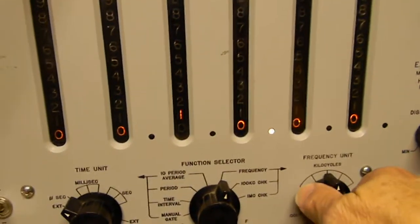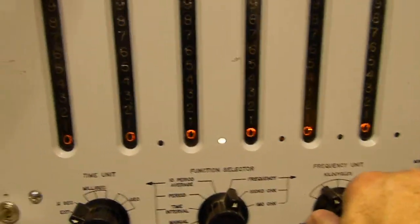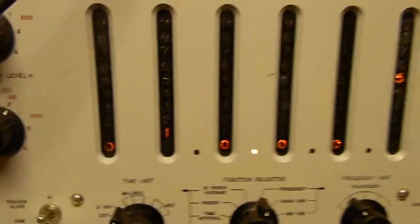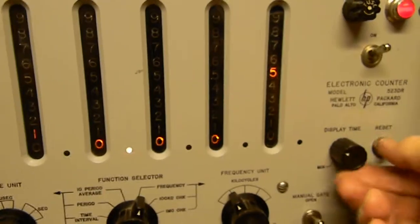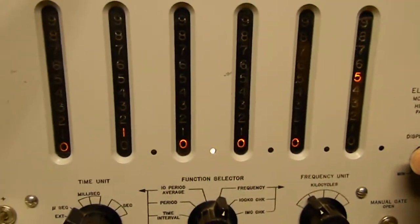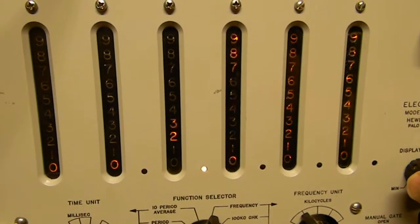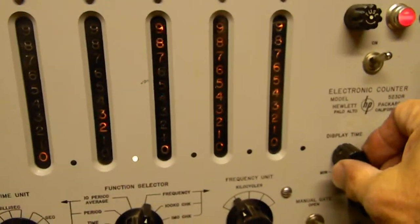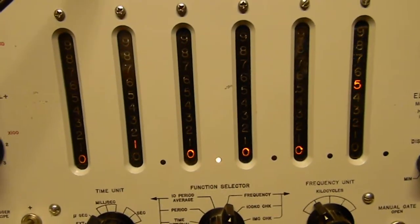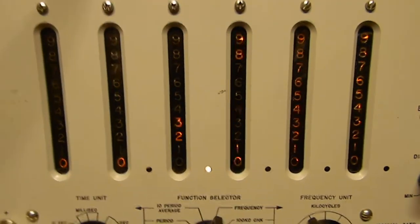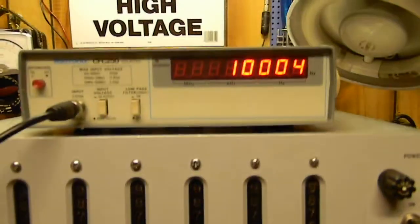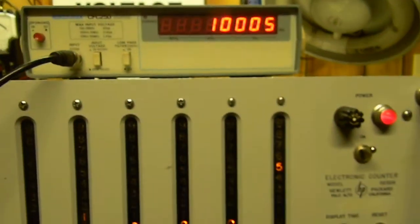We can make it count faster or slower with this. They call it display time. If we turn it up here, it'll only count once in a while and then hold longer. 10,005, just like the top one. It's amazing.